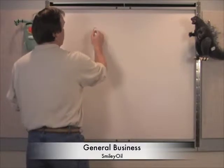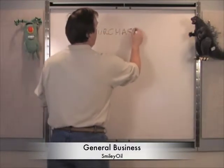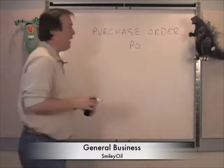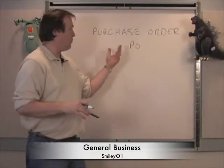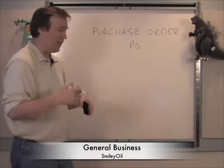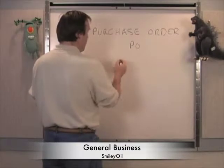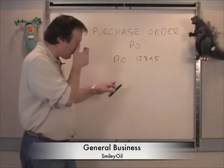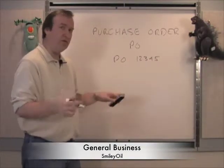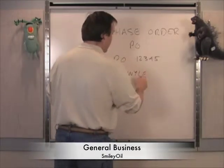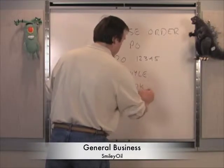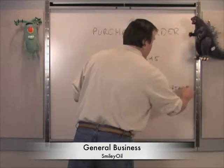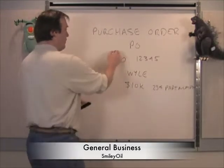Right at the start there's this magic thing called a purchase order, often called a PO. This is an agreement to buy a product. So when we want to buy $10,000 in modems, we issue a PO and it has some unique number. We send this document to Wiley, and it says I want $10,000 worth of modems, with a specific part number.